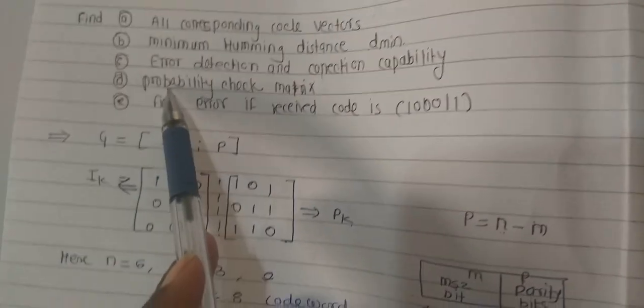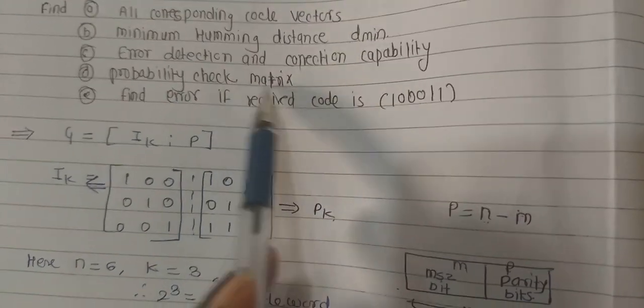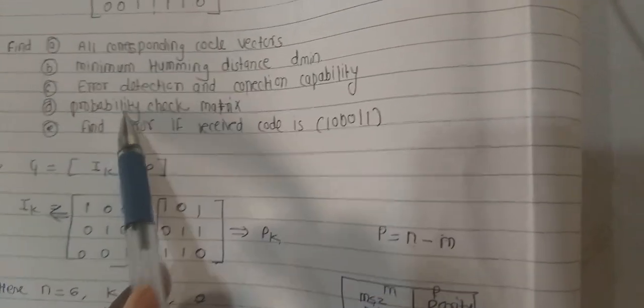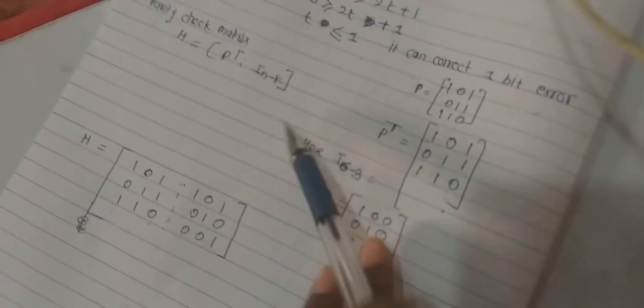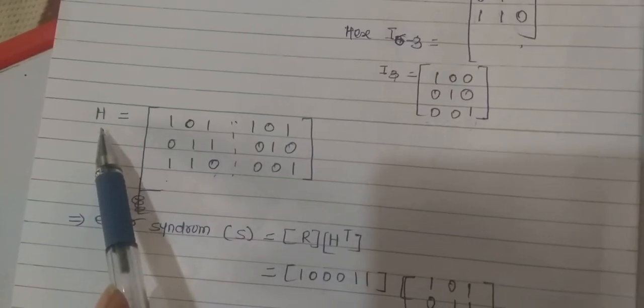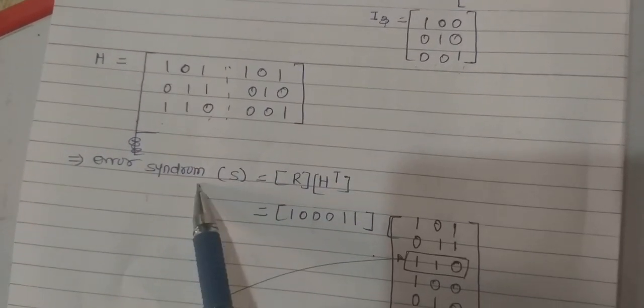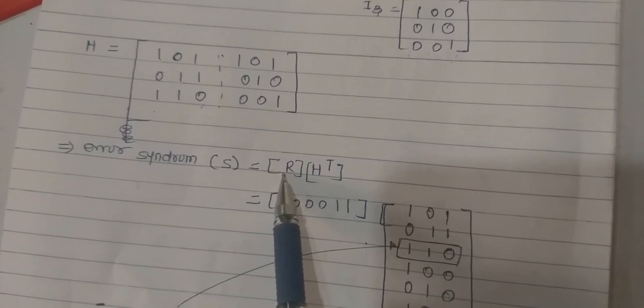The last one is finding the parity check matrix, and next if the error is received, what will be the error code. Once you get the parity check matrix, you can calculate the error syndrome. Error syndrome S is equal to R, that is the received error which is given in the problem, times transpose of H matrix.